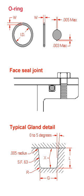Standards: ISO 3601 Fluid Power Systems — O-rings. ISO 3601-1:2012 specifies Inside Diameters, Cross-Sections, Tolerances, and Designation Codes. ISO 3601-2:2016 covers Housing Dimensions for General Applications. ISO 3601-4:2008 covers Anti-Extrusion Rings.